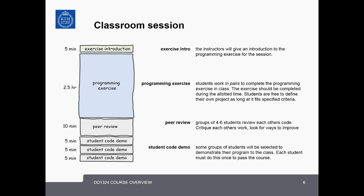In the next 2.5 hours, students will work in pairs to complete the programming exercise in class. Students will half the time be able to choose their own pairings, and half the time the instructors will choose the pairings. The exercise should be completable during the allotted time. Students are also free to deviate from the given exercise as long as it meets the criteria given at the beginning of the course, giving them freedom to follow their own ideas.